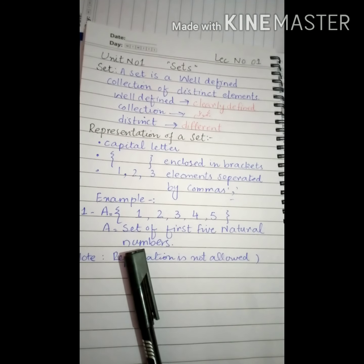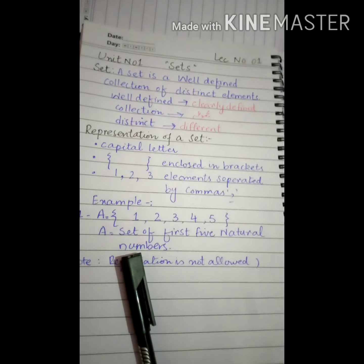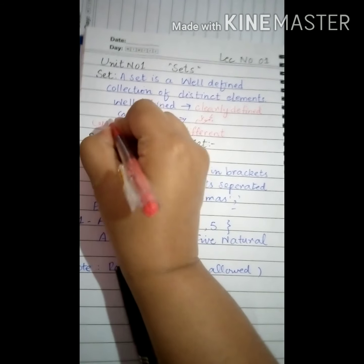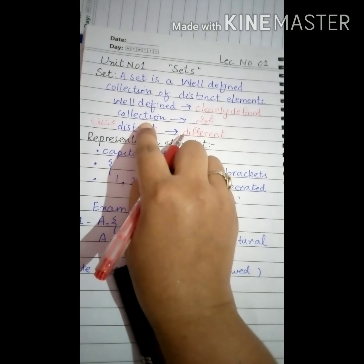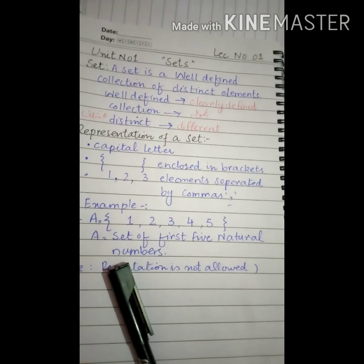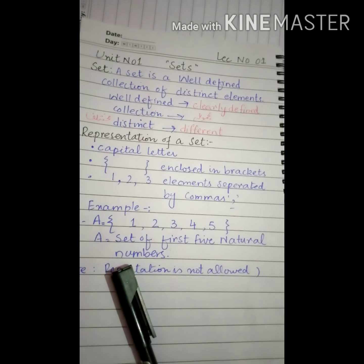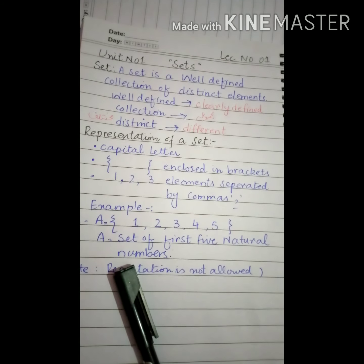What is the meaning of distinct? Distinct means different, مختلف. Distinct means مختلف, collection means مجموعہ, well defined means جو آسانی سے سمجھا جا سکے. So set کیا ہوا ایک ایسا collection آپ کے پاس elements کا ہو گیا جس کو آپ آسانی سے سمجھ سکے.